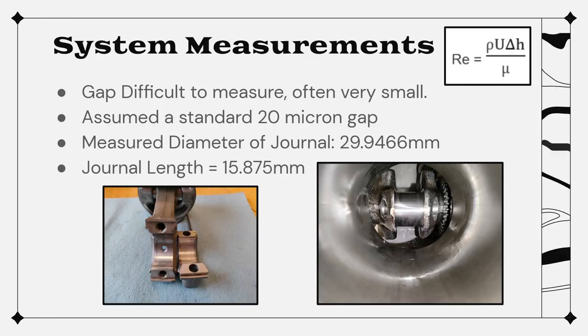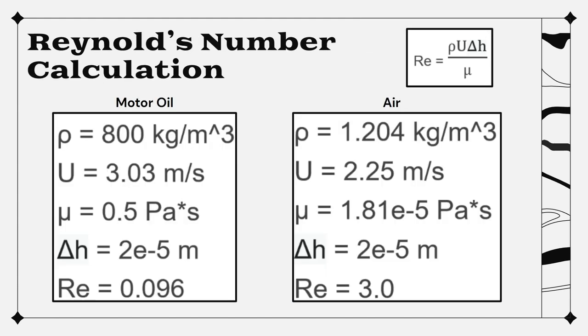How do you get a low Reynolds number? One way is by taking the delta H in the Reynolds equation and making it very small. And we saw this in our engine with only a 20 micron gap for the fluid. With this 20 micron gap, you can calculate the Reynolds number as we did here for both motor oil and air.